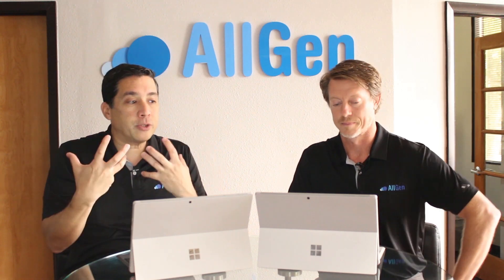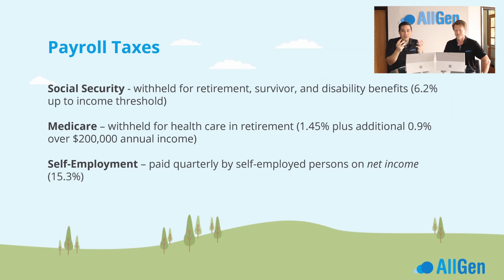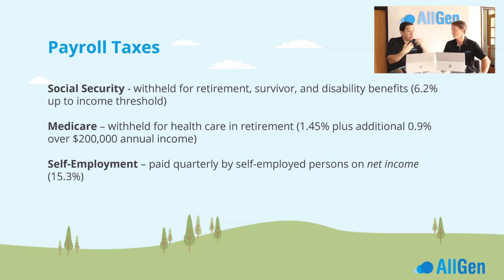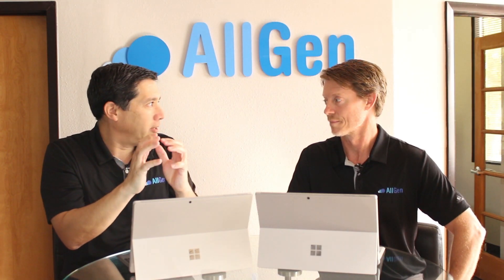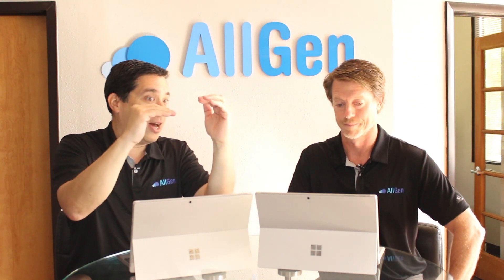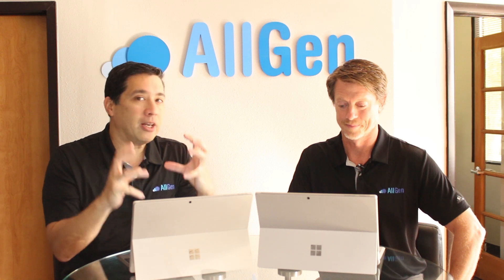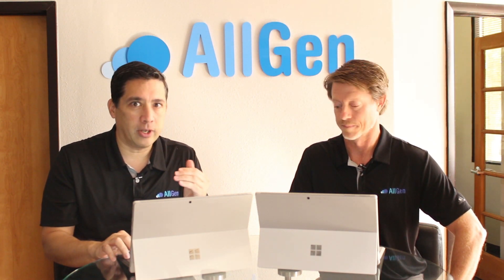There's also payroll tax. When you look at your paycheck, there are various taxes automatically withdrawn — federal tax, state tax if applicable, Social Security withheld for retirement and disability benefits, Medicare withheld for healthcare and retirement, and self-employment tax if you're self-employed. These all add up when combined with federal and state taxes — another reason why it's so critical to take tax into account when doing financial planning.